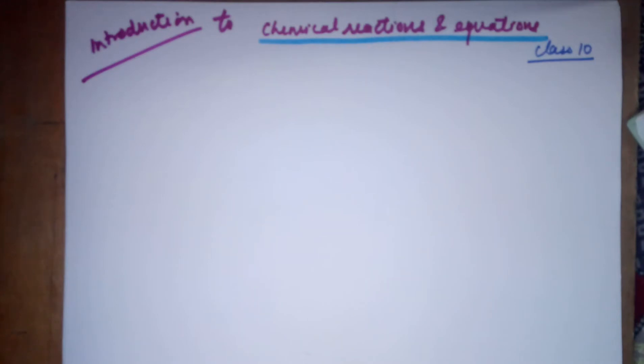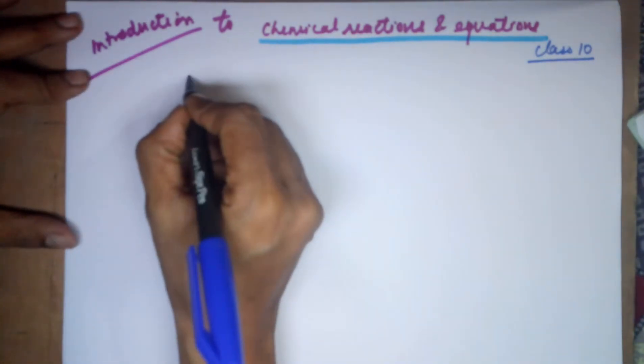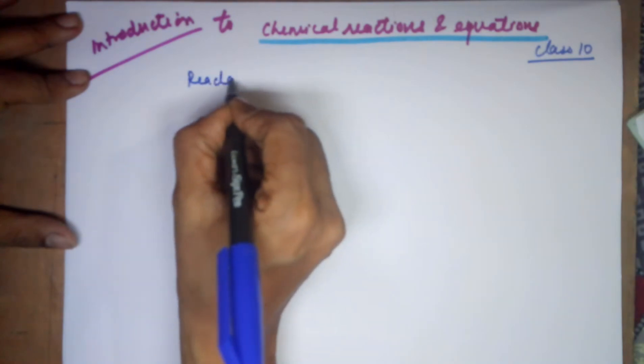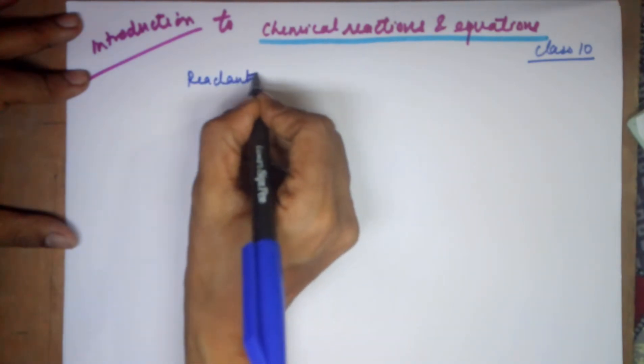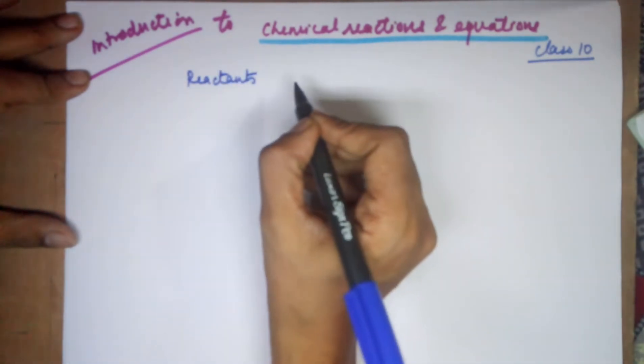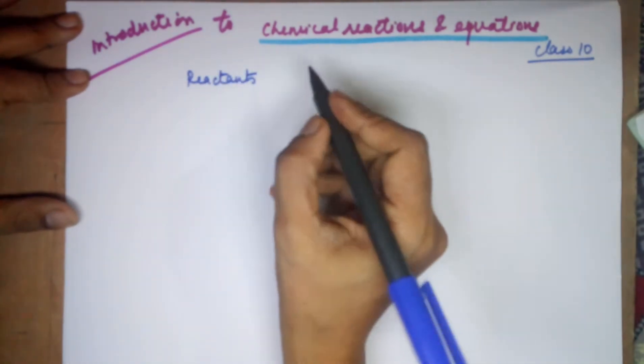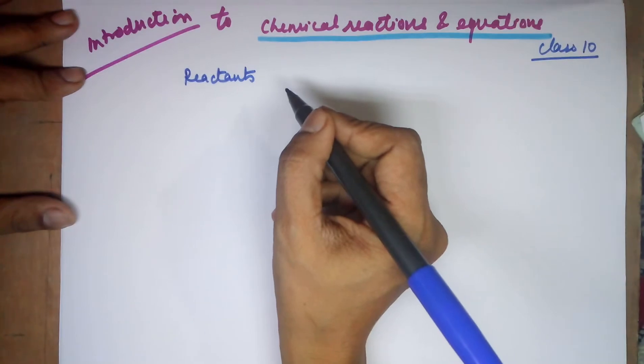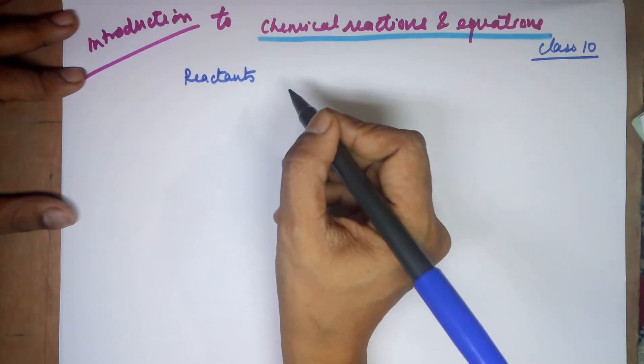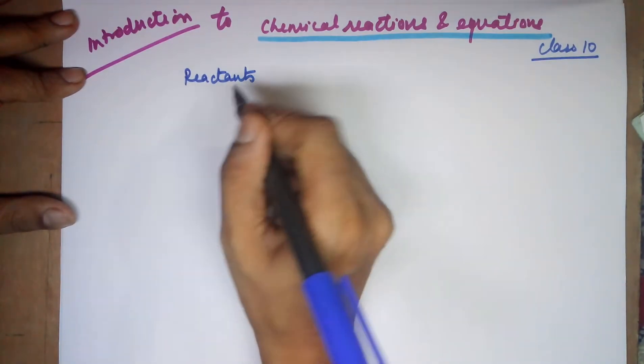When we talk about a chemical reaction, you require the reagents to start off a reaction. These reagents are known as the reactants. The chemicals that you use in the beginning of a reaction are called as the reactants, and they are always to be written on the left-hand side.